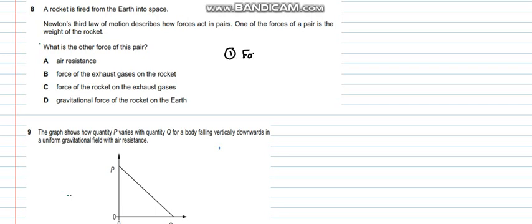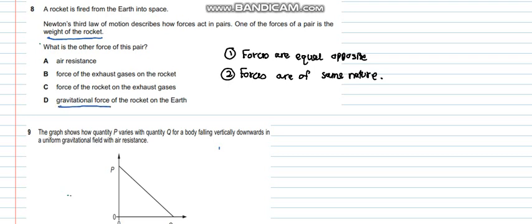And the second thing is that the forces are of same nature. So over here it says that one of the force is the weight of the rocket. So what option could it be? Air resistance, force of the exhaust gases, force of the rocket on the exhaust gases and the gravitational force. So this is a gravitational force, the nature is gravitational and over here it's the weight of the rocket. So these both are the forces of the same type and they are equal and opposite in direction. So the answer is D.